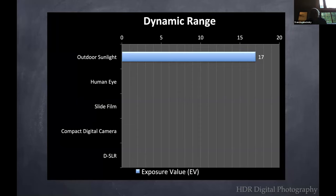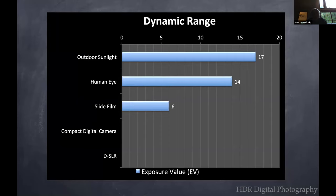So now we're talking about dynamic range. If you look at outdoor sunlight, it's 17 units. If you look at the human eye, which is excellent, we can see that it's 14 units. But then when we look at something like slide film, it's only six units.